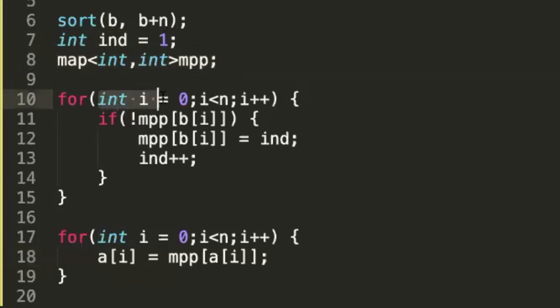Next step we traverse in the B array, and then if that element has not been mapped, we map it to some index. Let's say for the first time it comes, so obviously it will not be mapped. So you map it to 1 and then we increase it to 2. So similar thing keeps going.